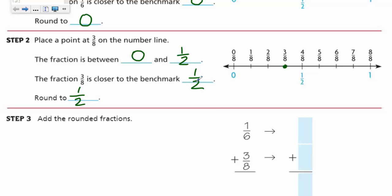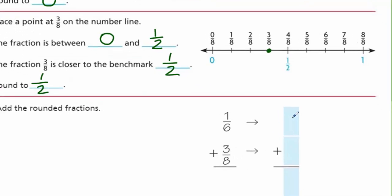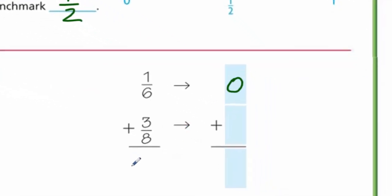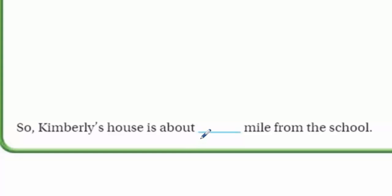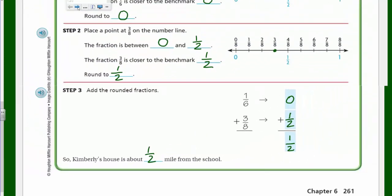Step three: add the rounded fractions. One-sixth rounded to zero, plus three-eighths rounded to one-half. One-half plus zero equals one-half. So Kimberly's house is about one-half mile from school. Now we're done with the first page!